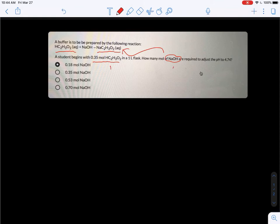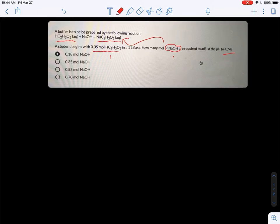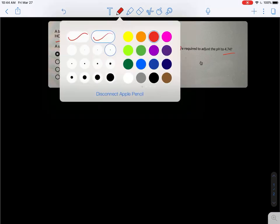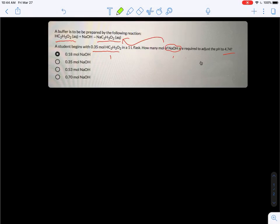We want the ratio to be such that if we use the Henderson-Hasselbalch equation, the pH is equal to 4.74. We don't need to, but I'll write this out so that it's very clear how to do this sort of problem. First we use the Henderson-Hasselbalch equation.